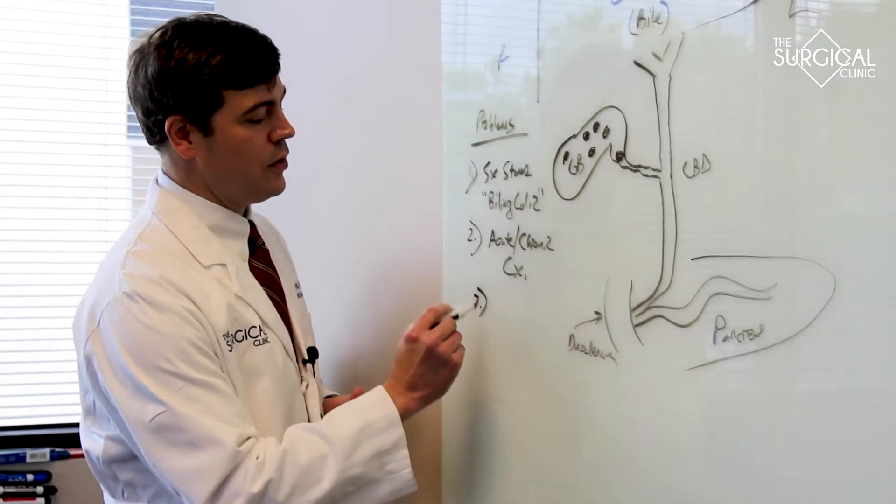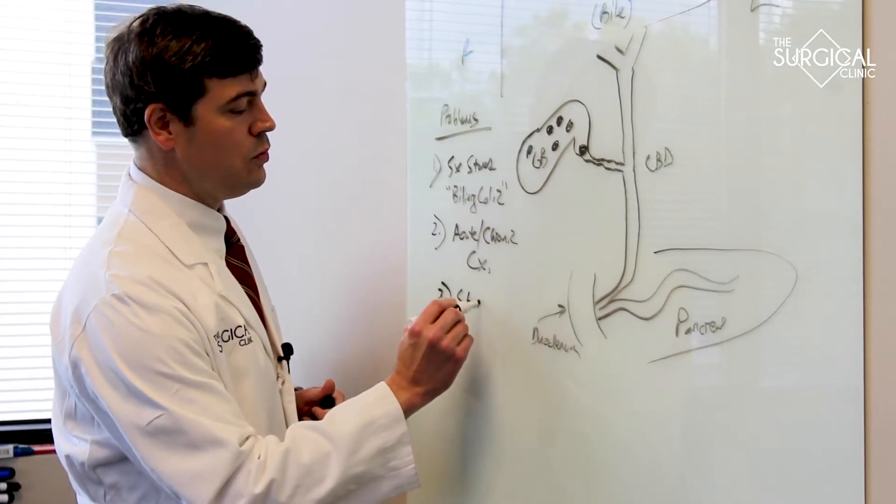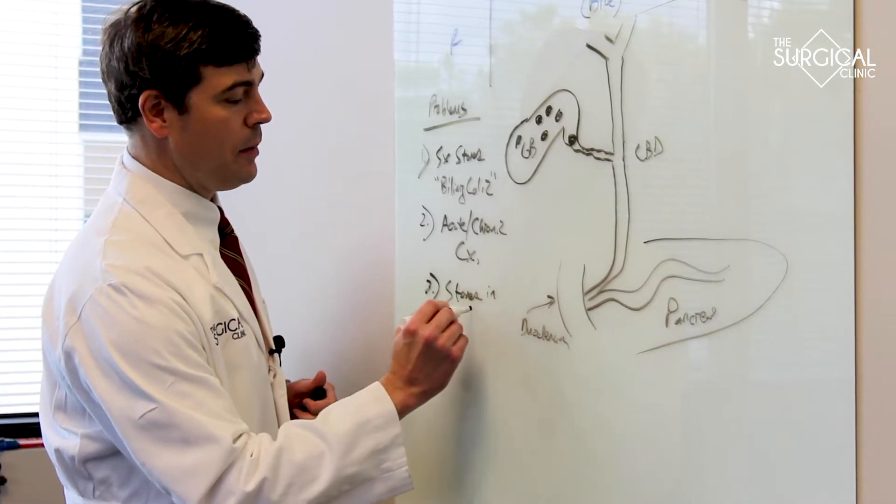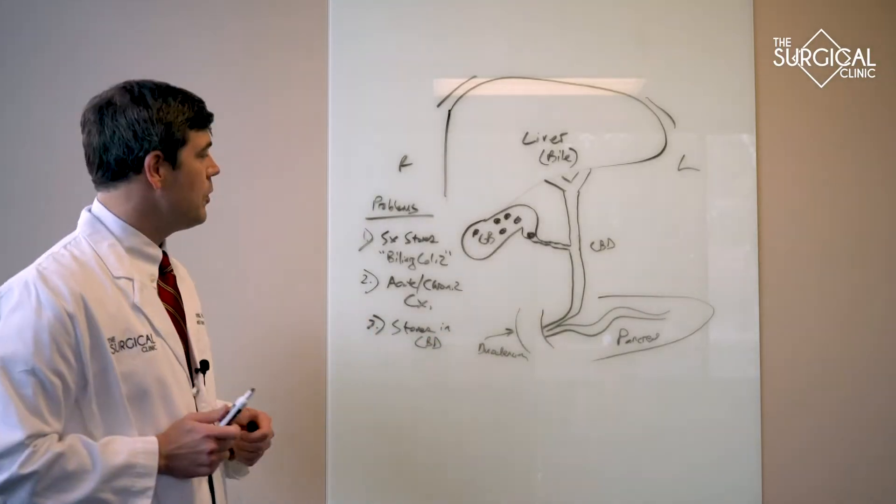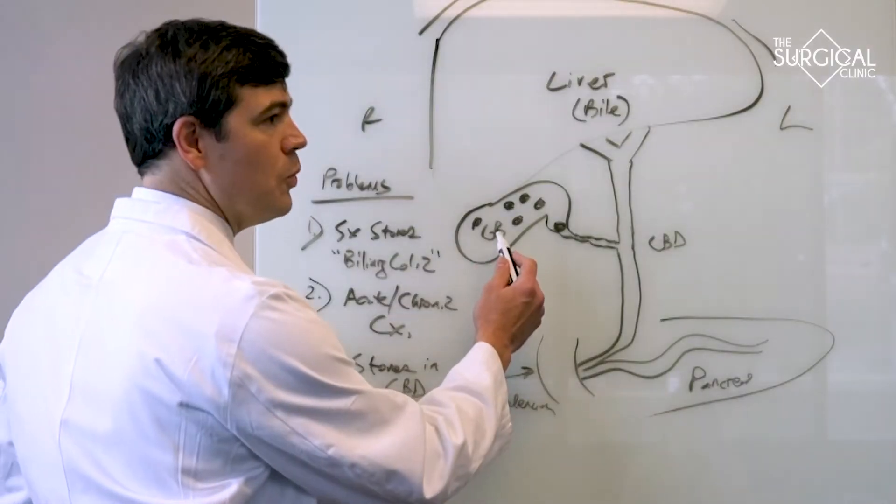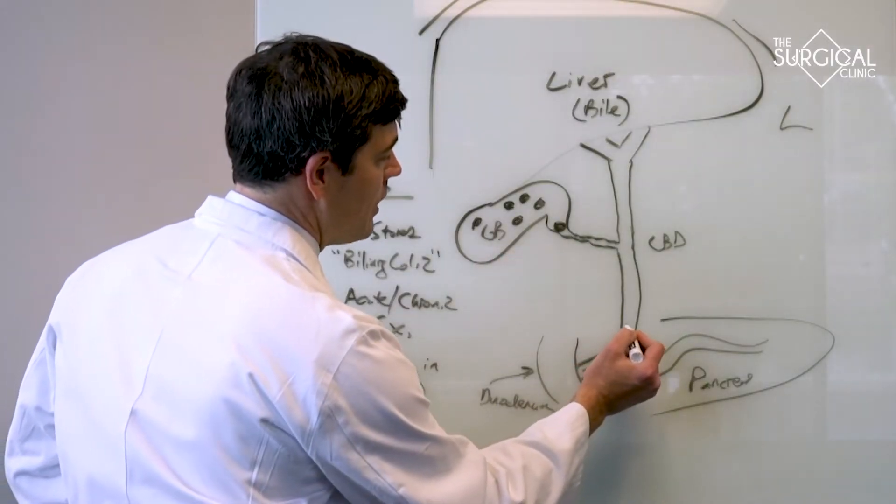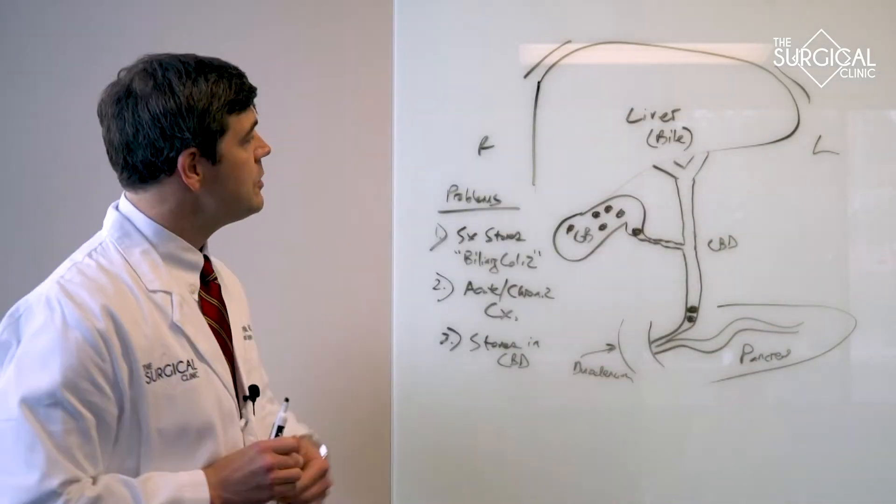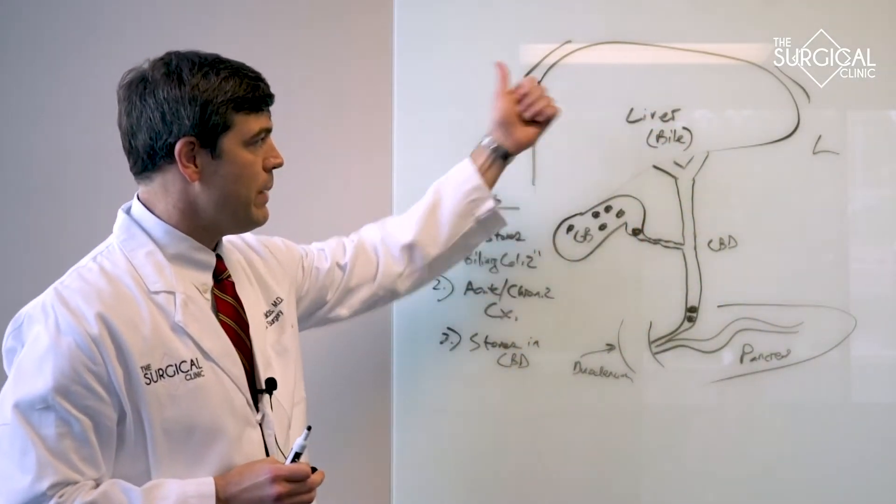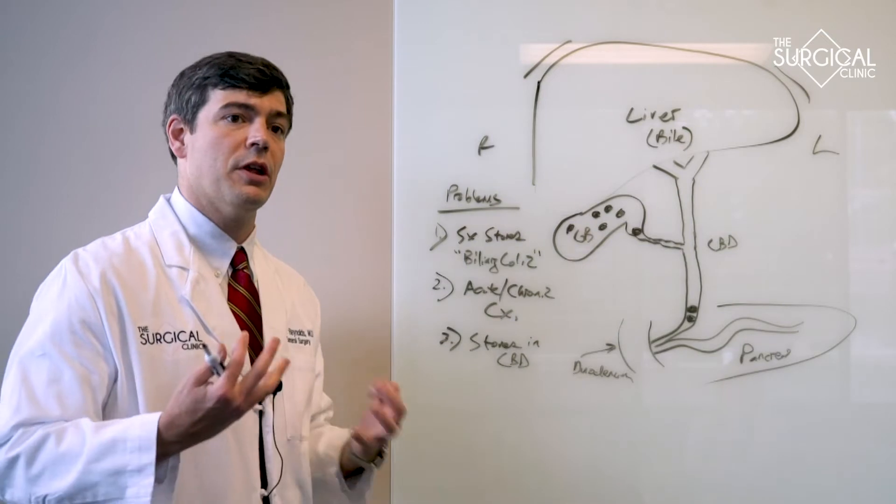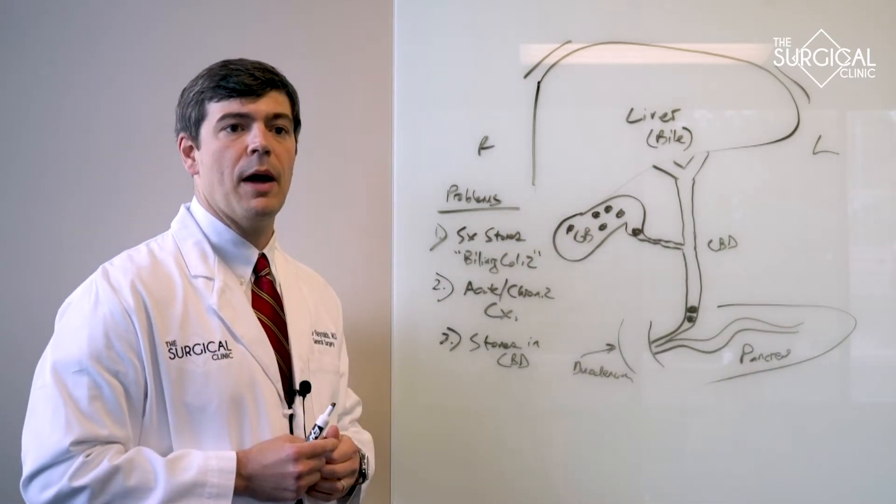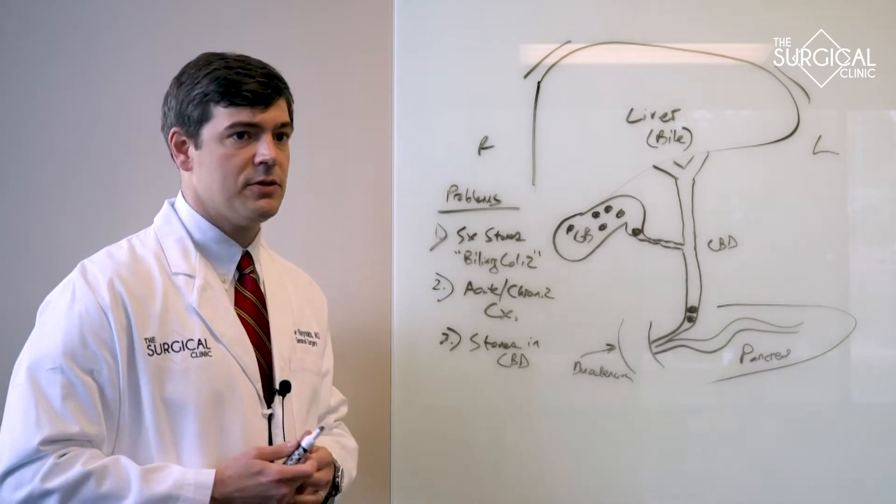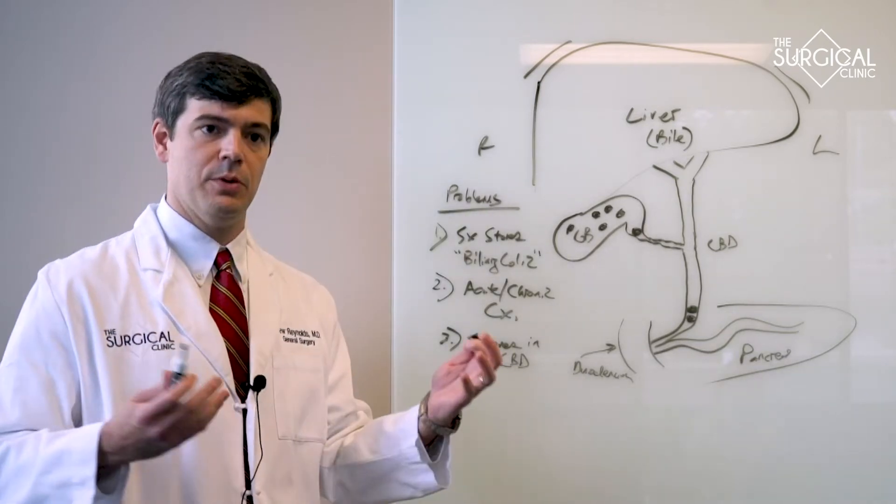Another thing that can happen when you have gallstones is you can get stones in your common bile duct and the doctor word for that is choledocolithiasis. This is where a stone will slip out of the gallbladder and get stuck down here in the main part of the bile duct. And if that happens the bile outflow from your liver gets backed up into your bloodstream and you start turning yellow or you get jaundiced and you can develop a really complicated infection called cholangitis. If that happens you end up in the hospital.